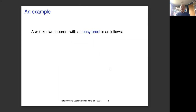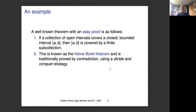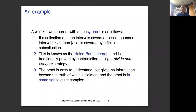One example — a well-known theorem with an easy proof that most of you met in the first year at university, if not before — is: if a collection of open intervals covers a closed bounded interval AB, then AB is covered by a finite sub-collection. This is known as the Heine-Borel theorem and is traditionally proved by contradiction using what I call a divide-and-conquer strategy.